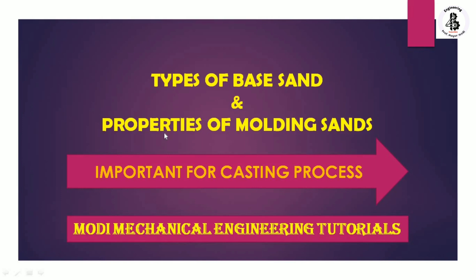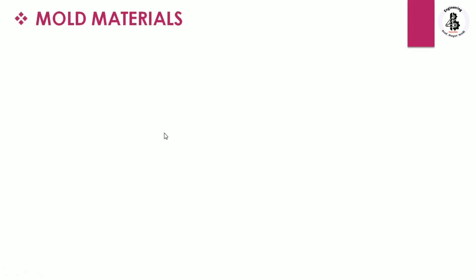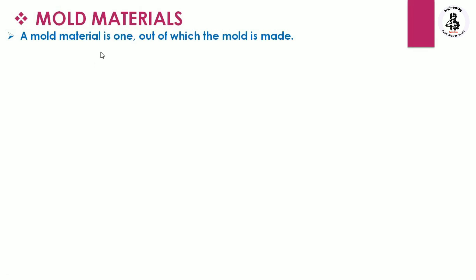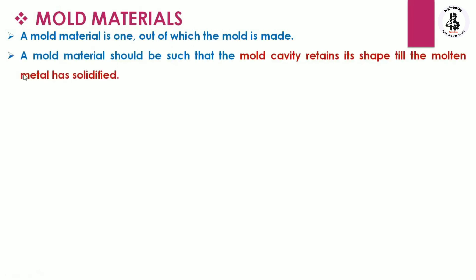Let us start with mold materials. A mold material is one out of which the mold is made. A mold material should be such that the mold cavity retains its shape until the molten metal has solidified. After solidification, some secondary processes are performed to convert the casting into the desired size and shape.